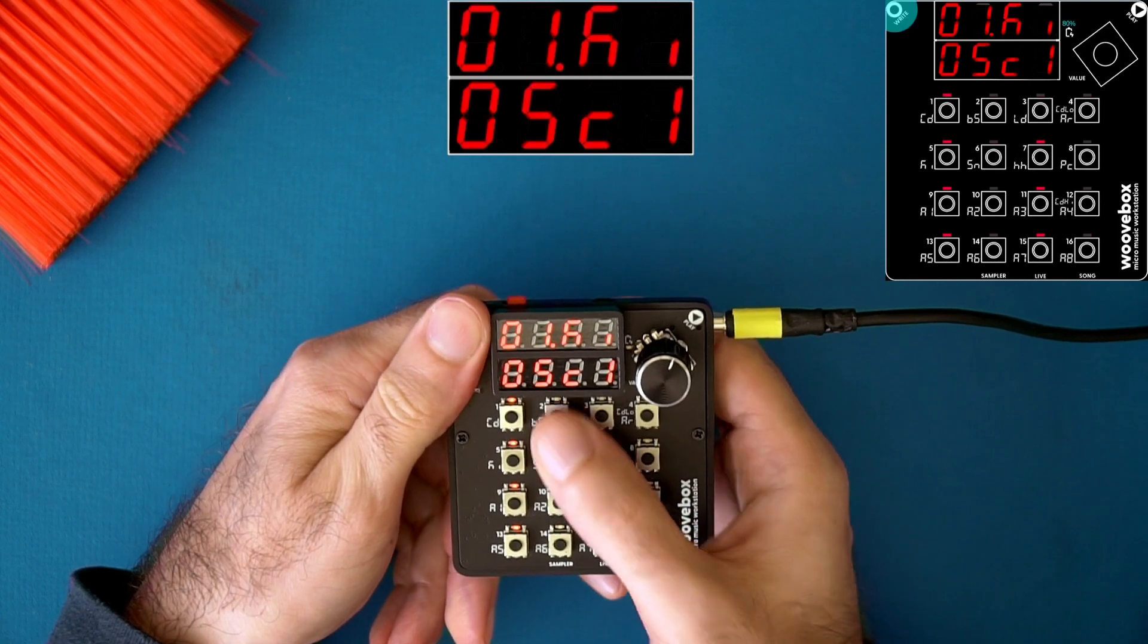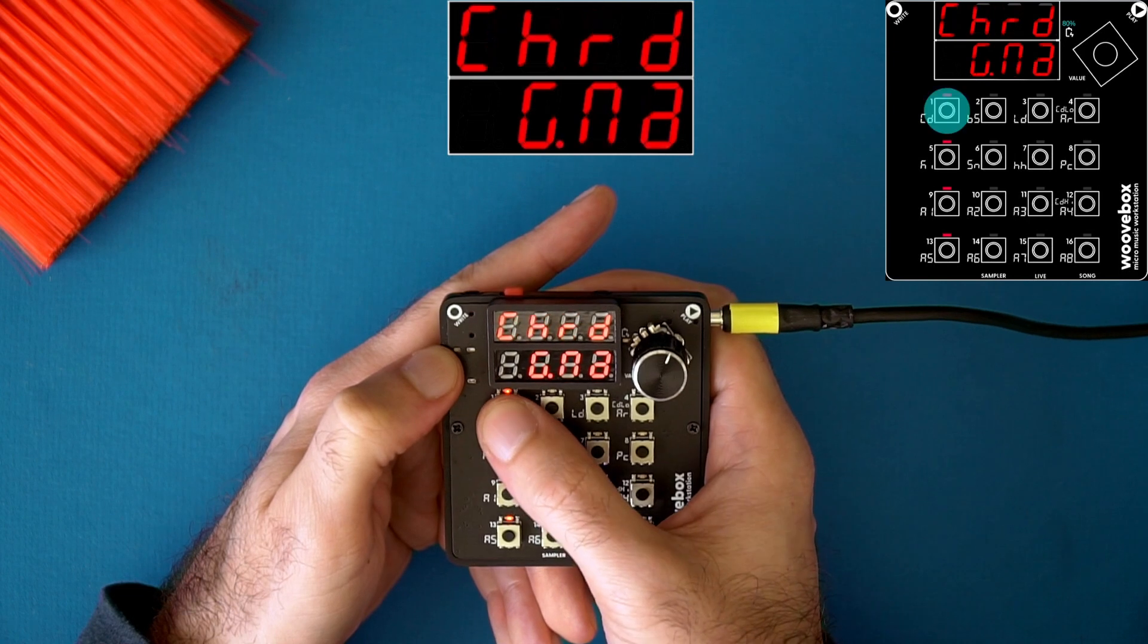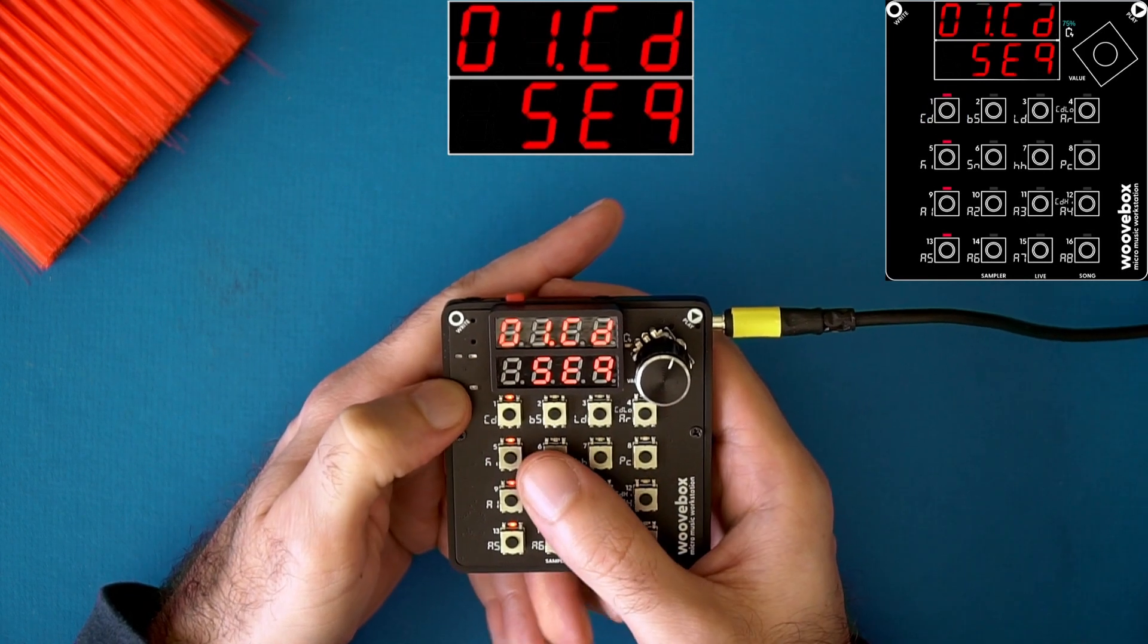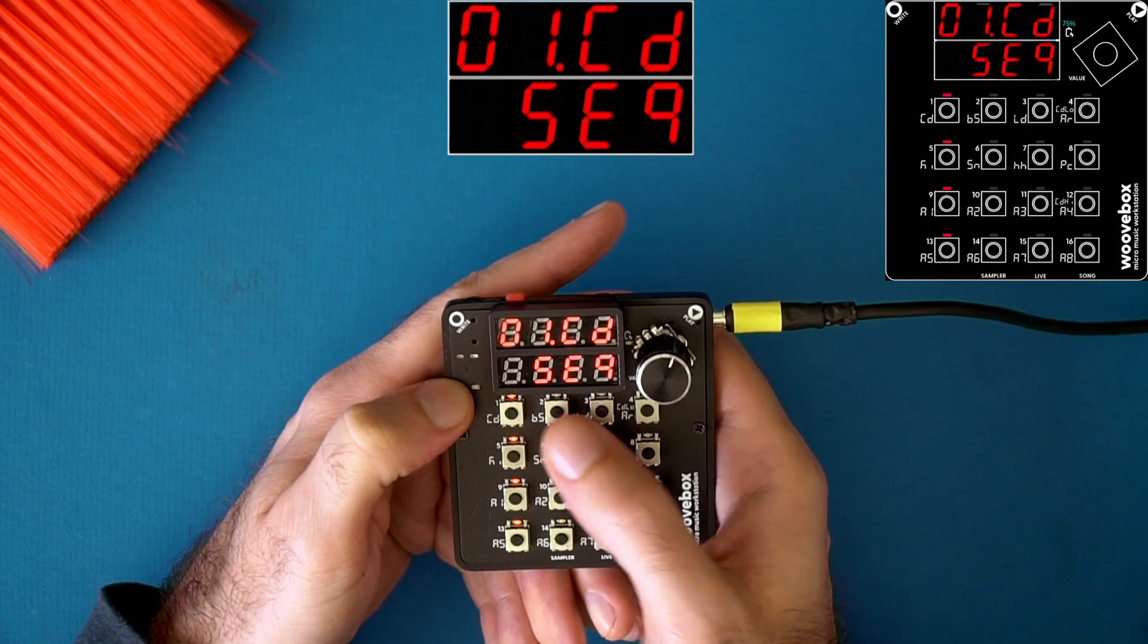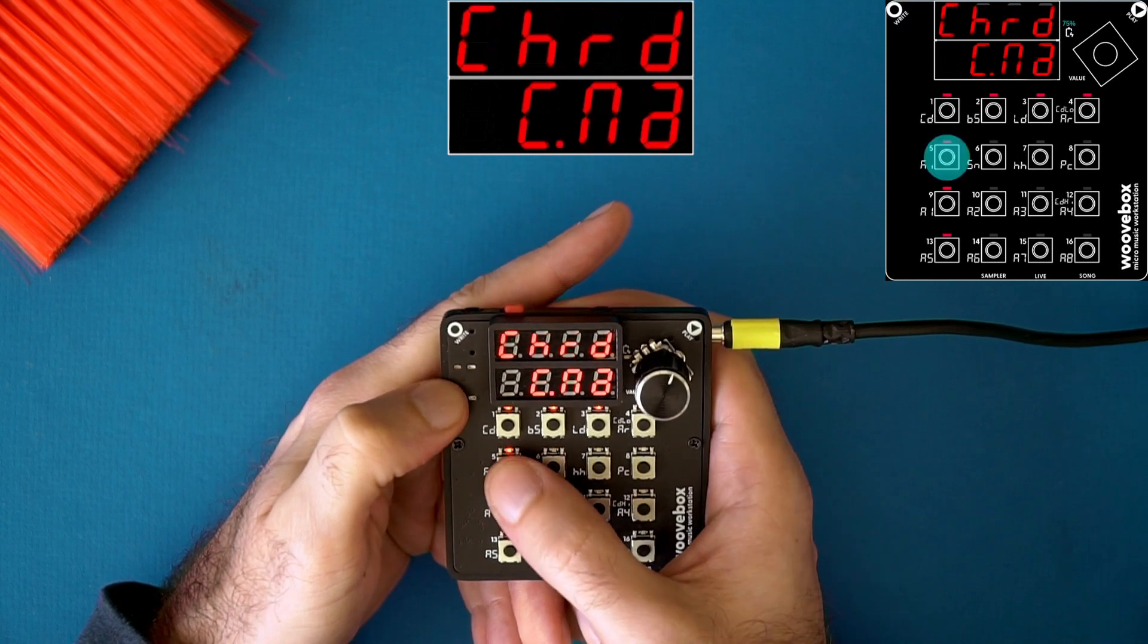Tip number four, while on the sequencer page, if you hold down a step, the next step you put down will be the same note. So if I wanted to quickly copy this note to these three steps, I can just hold it down and then put it down, same with this one.